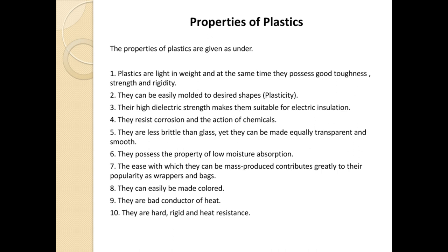We use plastics for electric insulation because of their high dielectric strength and because they are bad conductors of electricity. Next, they resist corrosion and the action of chemicals — they are good corrosion-resistant materials. They are also less brittle than glass, yet they can be made equally transparent and smooth, which is why glass is being replaced by plastic materials.